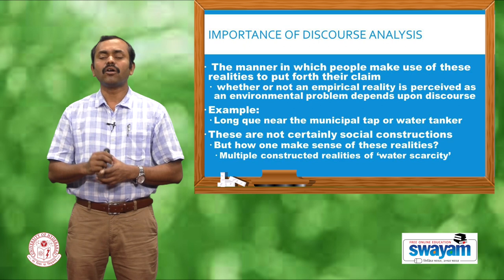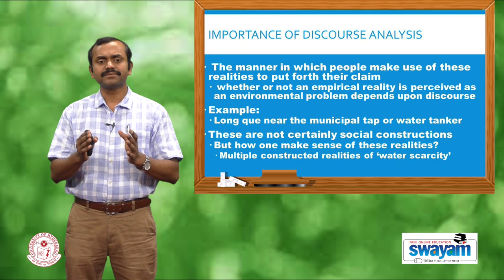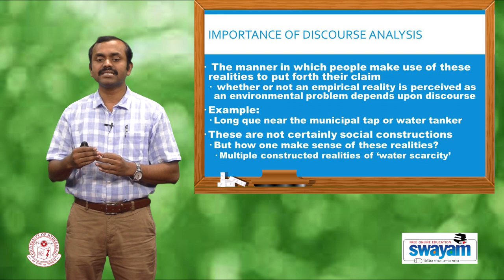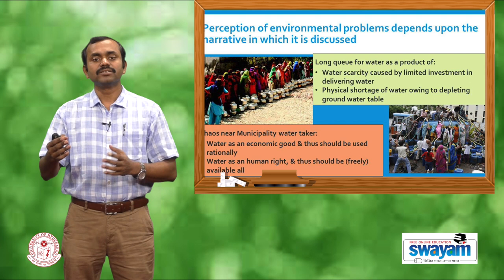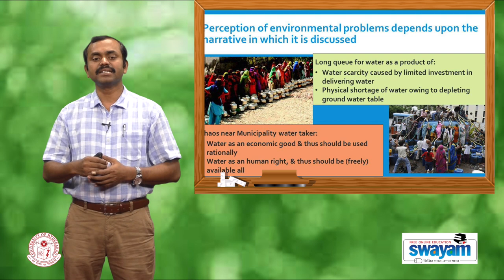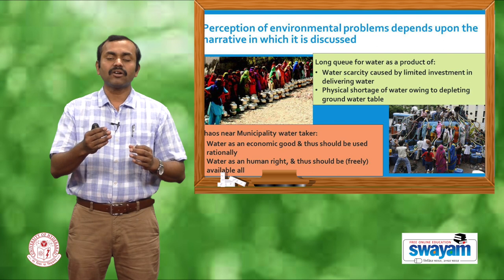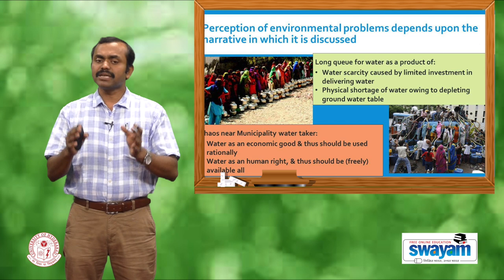Let us take two examples. Consider the long queue of women and girls near a municipal tap, or the chaotic situation when a municipal water tanker arrives near a slum. These realities are not social constructions — they are real. But how one makes sense of those realities is important. The same empirical reality of water scarcity can be defined in different ways: as a product of limited investment in delivering water, or as water shortage owing to depleting groundwater tables.